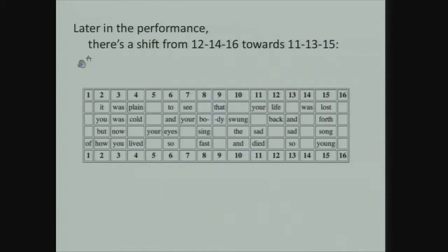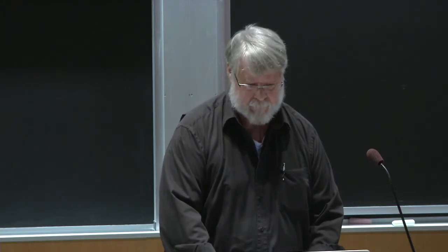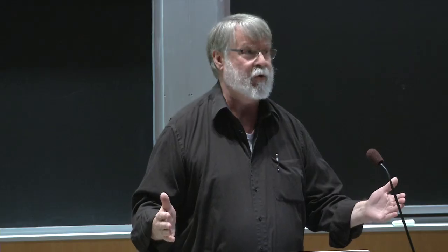Later in the performance there's a shift in the second half lines away from the perfectly square rhythm towards an anticipation involving some three-syllable units. [Plays later verse:] 'It was plain to see that your life was lost, you was cold and your body swung back and forth...' Comparing the first two verses versus verse five, you can see that towards the end of the song, units 13 and 15 are getting syllables placed just ahead of where the downbeat is still being marked by the music. This mixture of triple and duple units has been common in African-influenced popular music for 150 years, starting with the so-called concert danza habanera, which had eight time units divided 3+3+2.